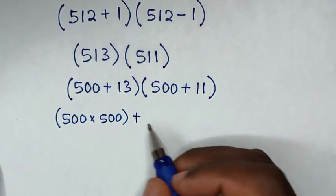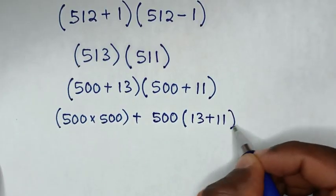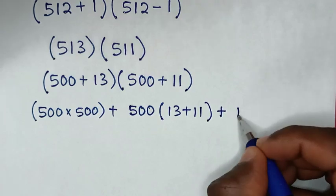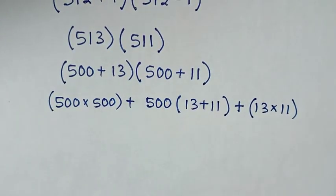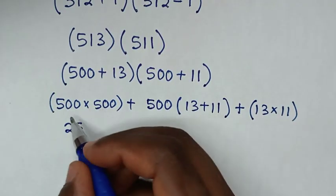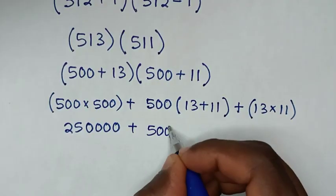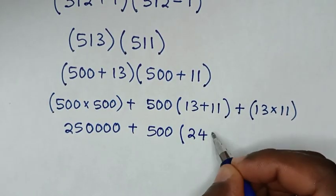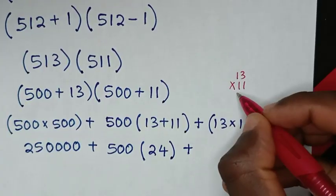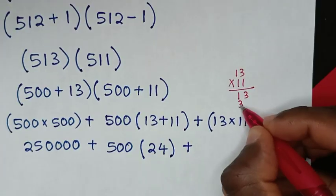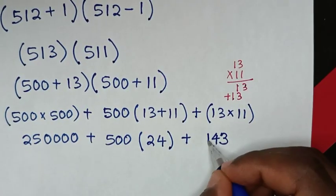Expanding: 500 times 500, plus 500 times 11, plus 13 times 500. We can factor out 500 from the middle terms to get 500 times 13 plus 11, bracket, plus 13 times 11. So 500 times 24, plus 13 times 11. Computing 13 times 11: 3 times 1 is 3, and 1 times 1 is 1 with carry, giving 143.